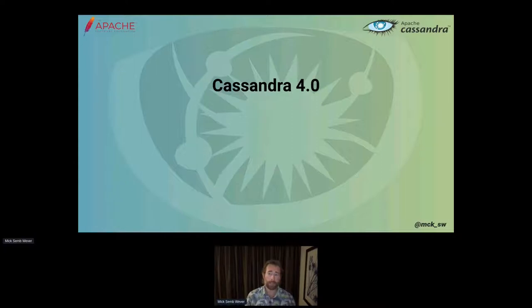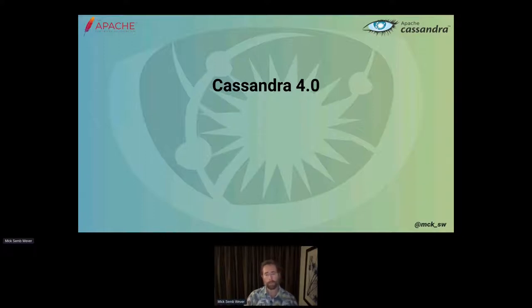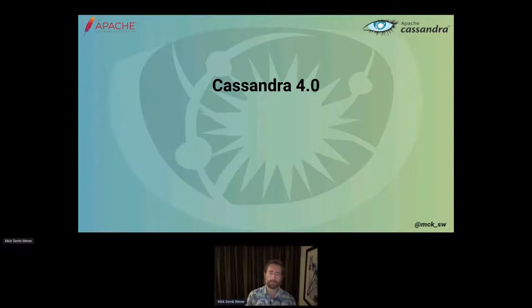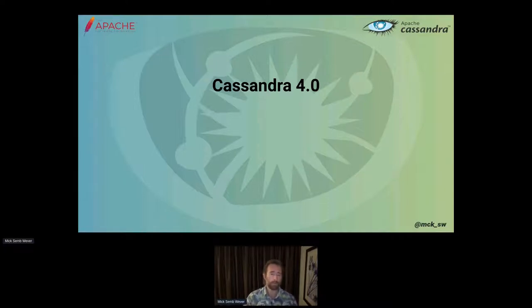Cassandra 4.0 did change the game for us. Cassandra is now a tech we could consider early majority, and so stability and reliability become more and more crucial for its reputation. As a community, we've gone from having predominantly one company driving the community and the technology to now having many more companies and stakeholders involved — Apple, Netflix, Amazon, Bloomberg, Alibaba, Dynatrace, Weiwei, InstaCluster, and Dynastax. That needs a lot more coordination, collaboration, and trust establishment amongst all of us. It makes for a much more enjoyable community to work in, but also requires more of us to make it successful.